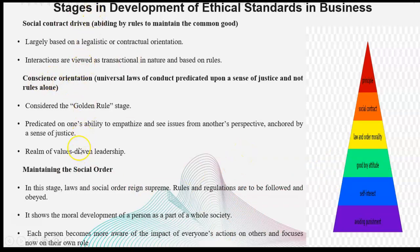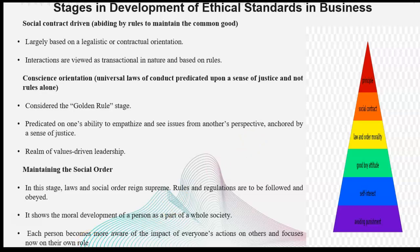All of these were discussed in detail in the last section; this is just an overview. Maintaining the social order: in this stage, laws and social order means obeying rules and regulations. We need to make sure that we are following and obeying the rules and regulations. It shows the moral development of a person as part of her whole society. Each person becomes more aware of the impact of everyone's actions on others and focuses on their own role — how ethical you would be in yourself with true values, so that it would be ethical for the organization as a whole.